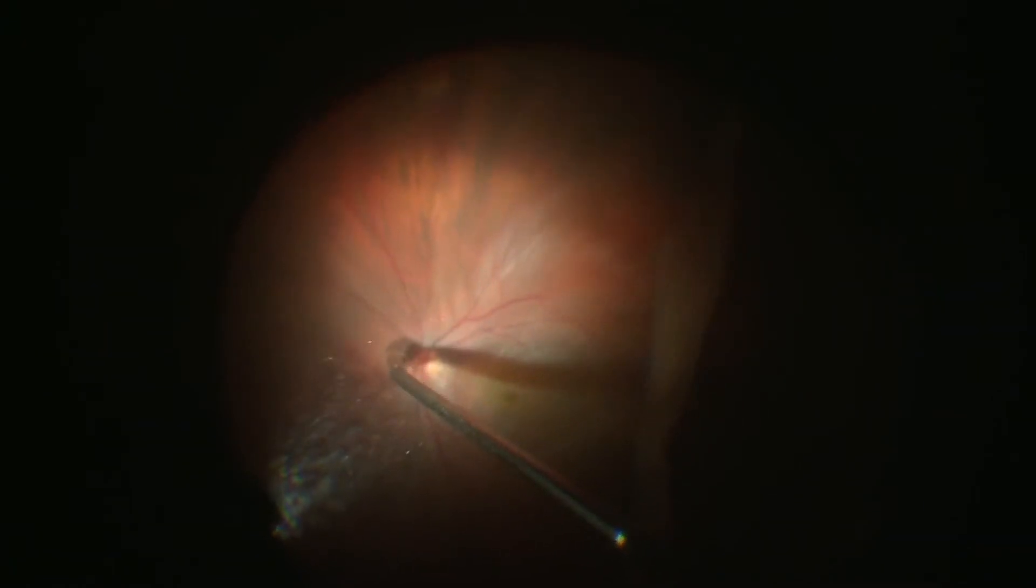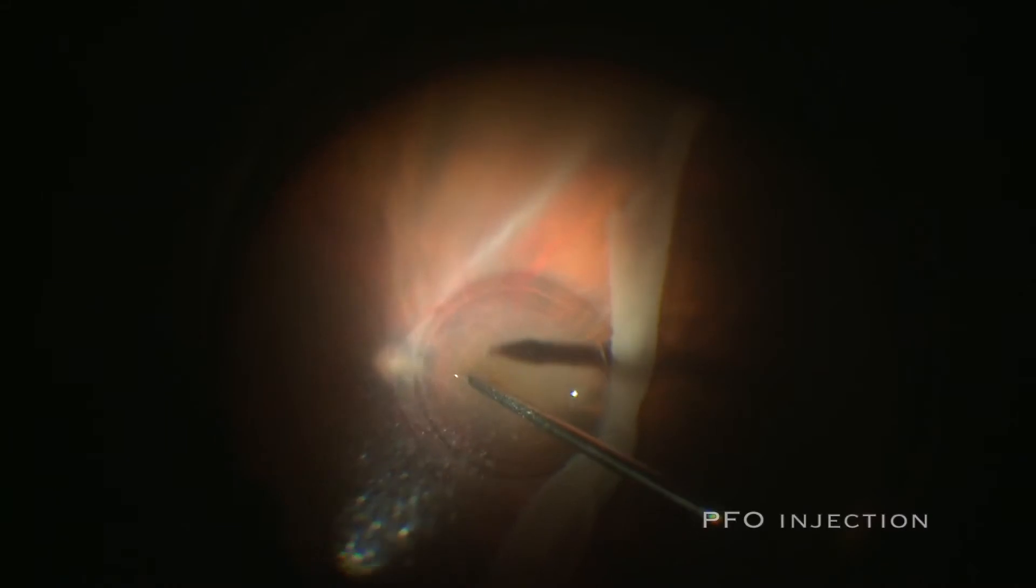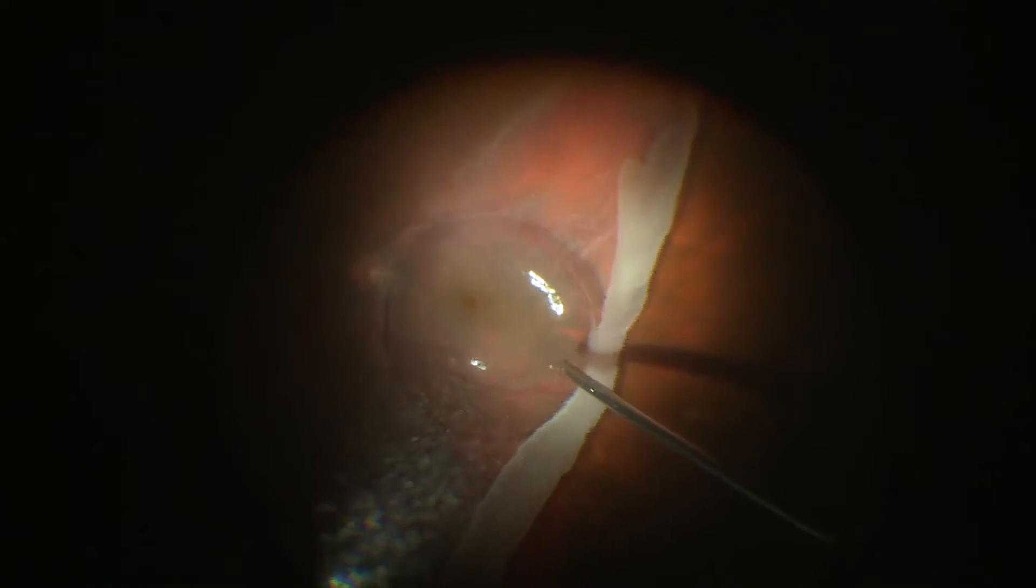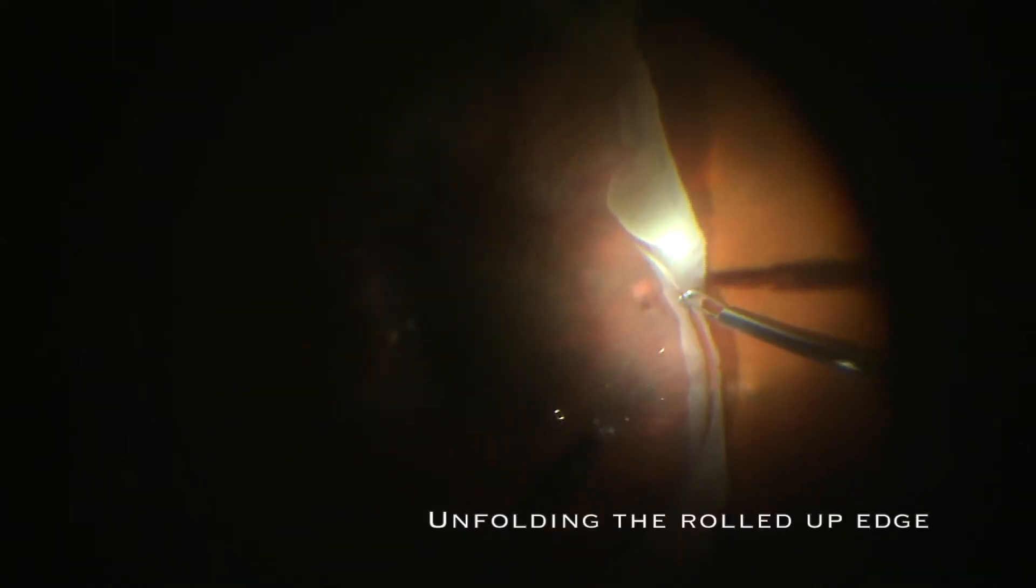After the retina is sufficiently mobile, the posterior pole is stabilized with PFCL till the edge of the tear. As we can see, due to the adhesions, retina is unable to unfold with PFCL.